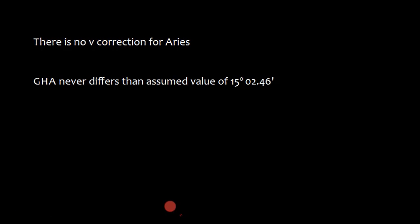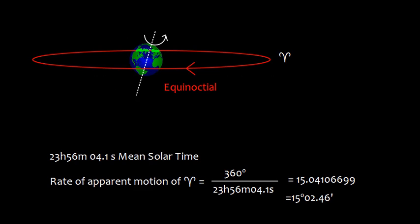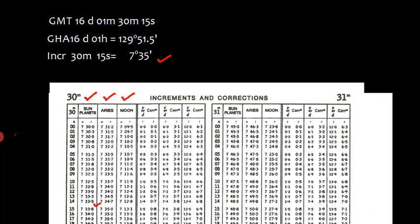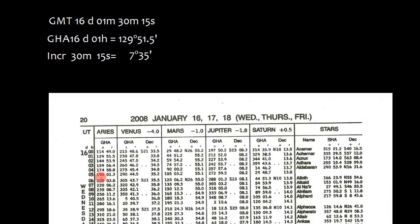Now if we look carefully, there is no V correction for Aries because the GHA, that is Greenwich hour angle, never differs than the assumed value of 15 degrees 02.46 minutes. If we take out the difference from the Aries, we get the same assumed rate. So there is no V correction.